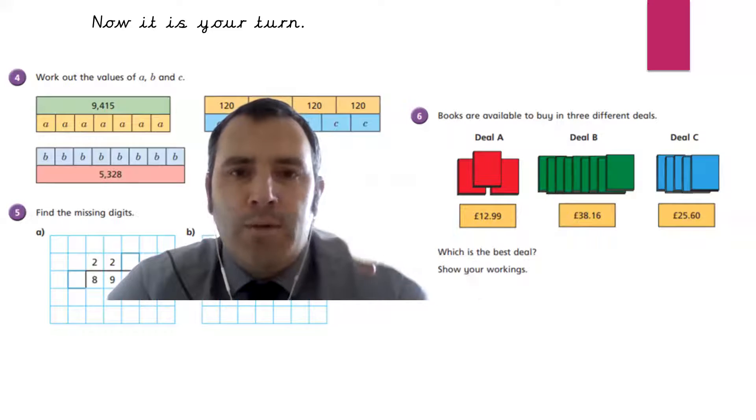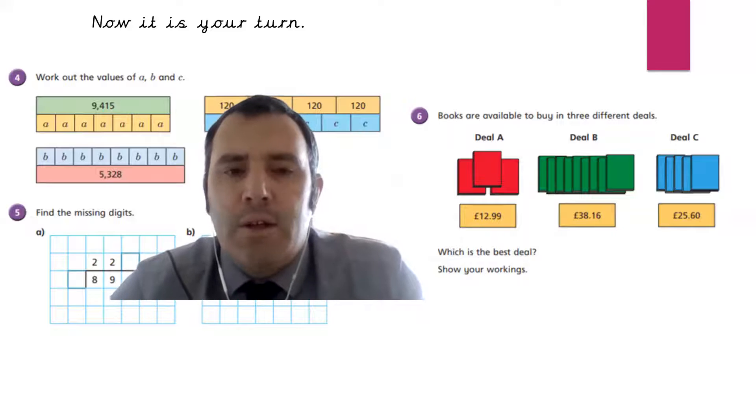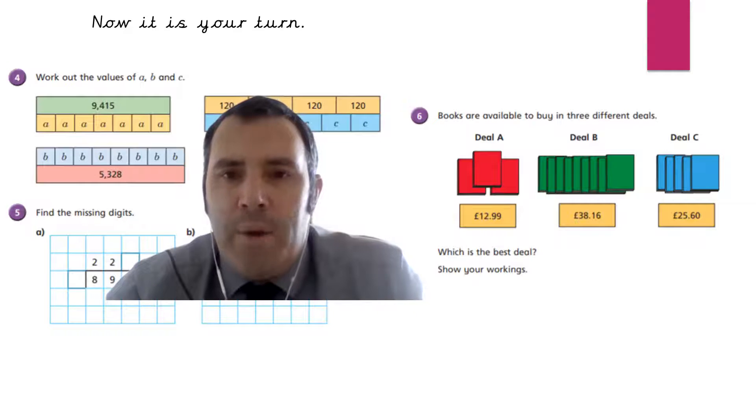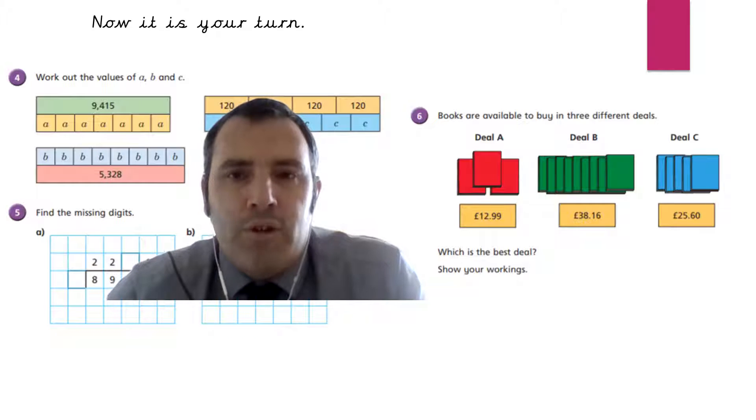So Deal A, £12.99 is the total cost of the three books. So we need to find out how much each book costs. So we'll do 12.99 divided by three. Deal B is £38.16 for nine books, so we'll do £38.16 divided by nine. Deal C, right at the end over there, is five books for £25.60. So we're being asked to work out what £25.60 divided by five is.